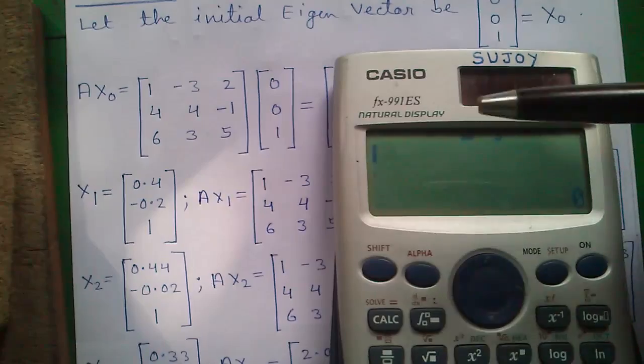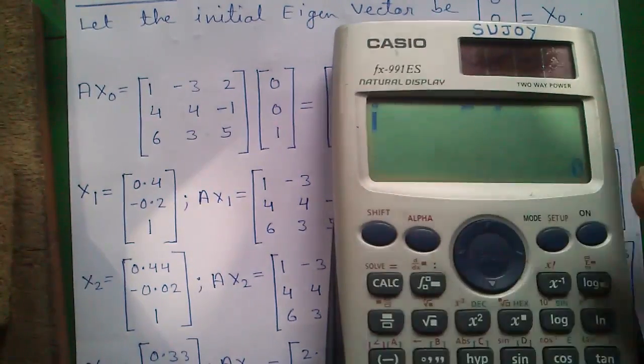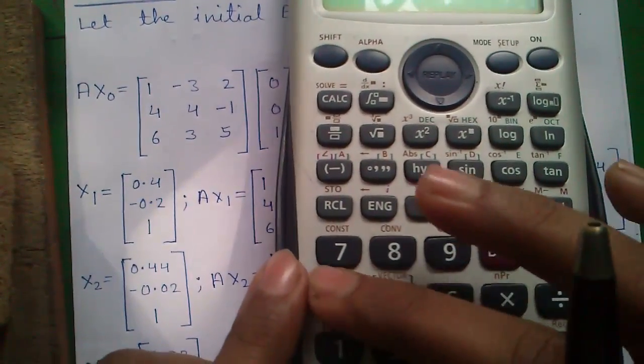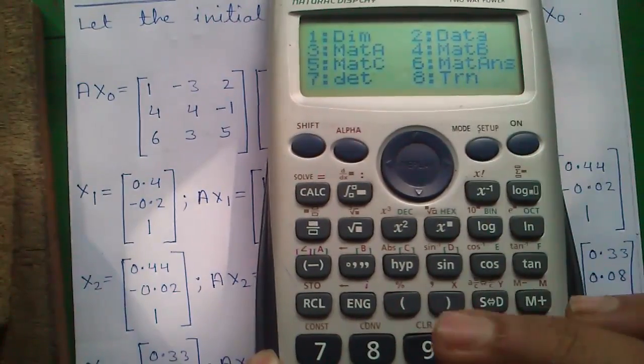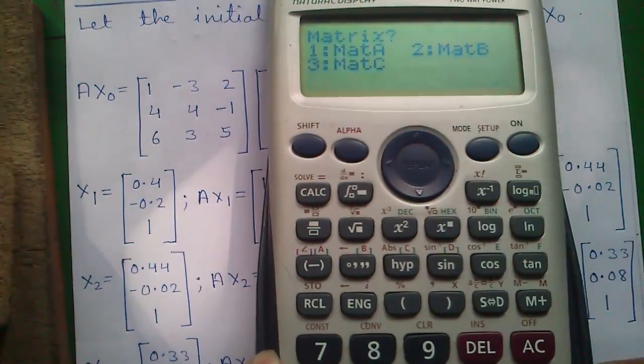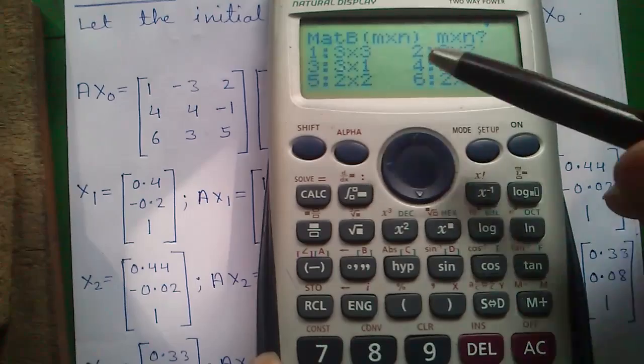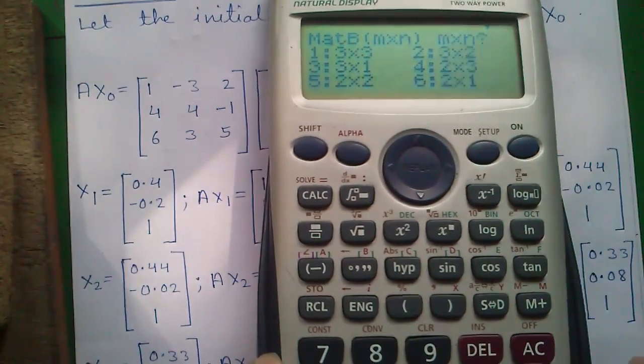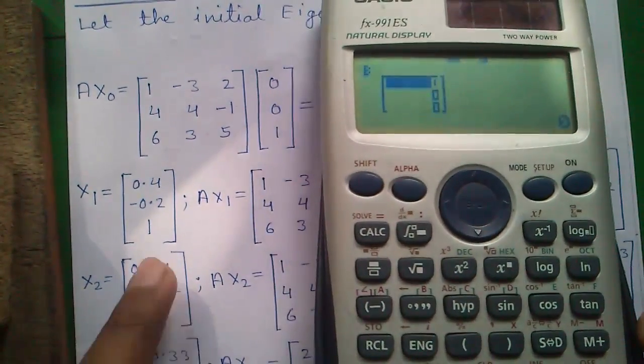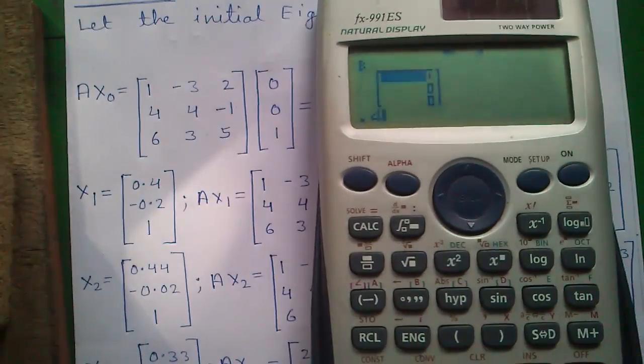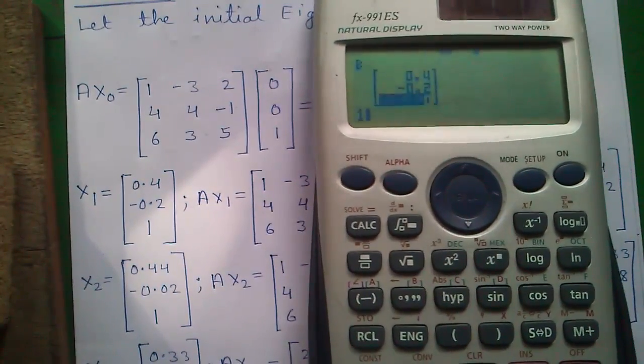Now we will enter the x1 value into the calculator at matrix B. Press shift and 4 for matrix, 1 for dimension, 2 for matrix B, and 3 for 3 by 1 matrix. Enter 0, 0, 1. Press AC to clear the screen.